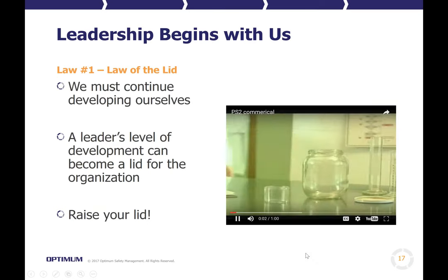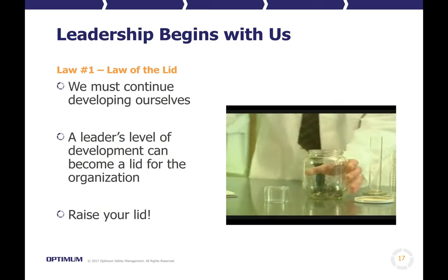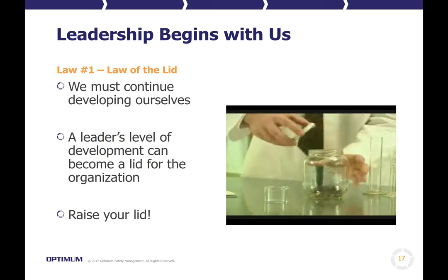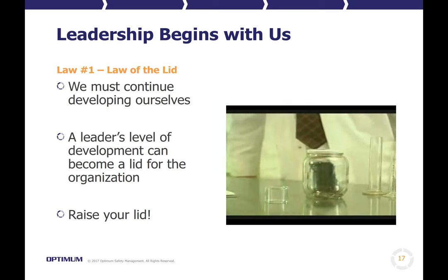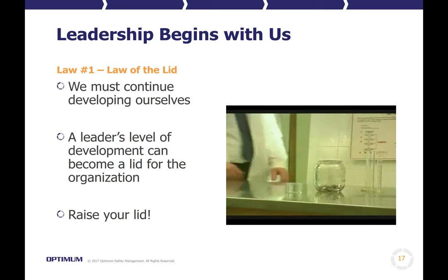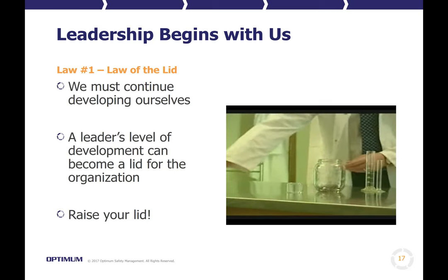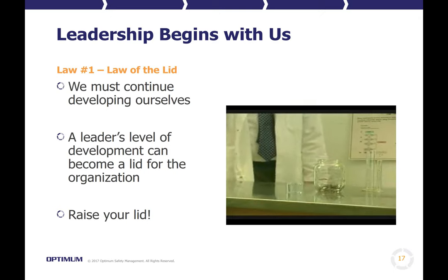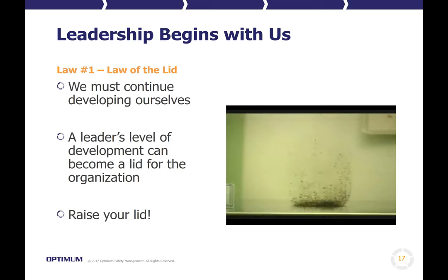Training fleas requires a glass jar with a lid. The fleas are placed inside the jar and the lid is then sealed. They are left undisturbed for three days. Then when the jar is opened, the fleas will not jump out. In fact, the fleas will never jump higher than the level set by the lid. Their behavior is now set for the rest of their lives. And when these fleas reproduce, their offspring will automatically follow their example.